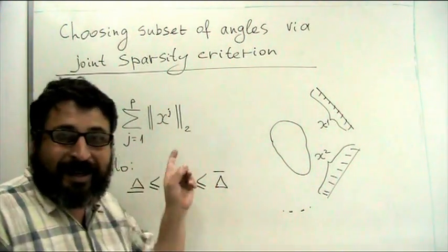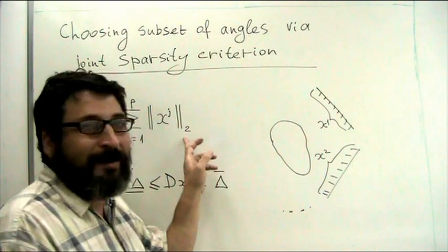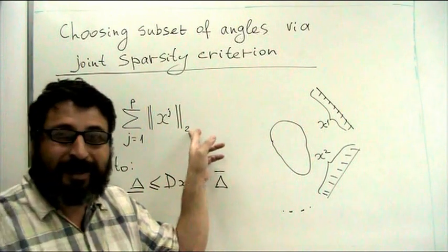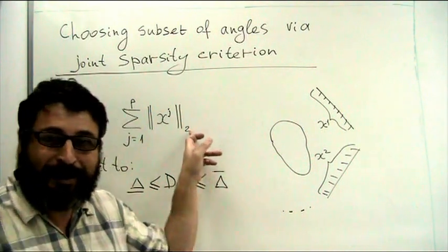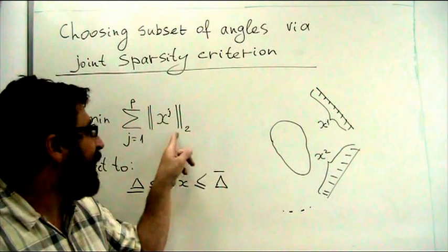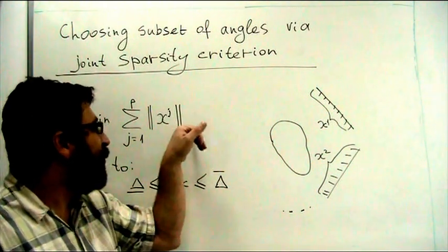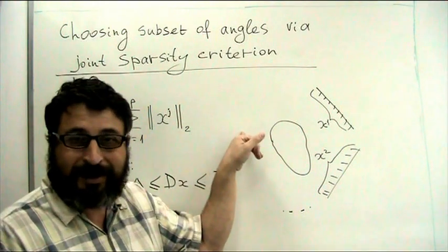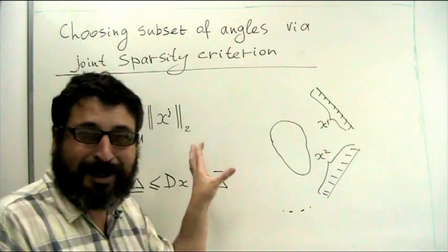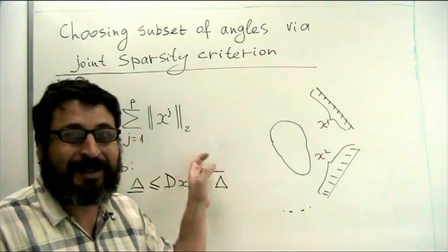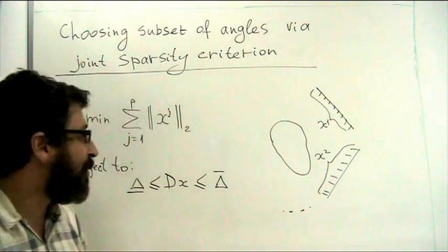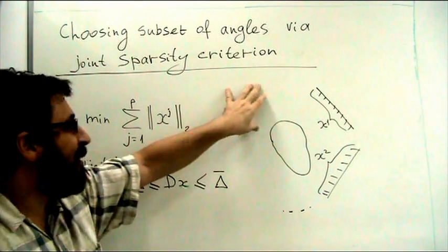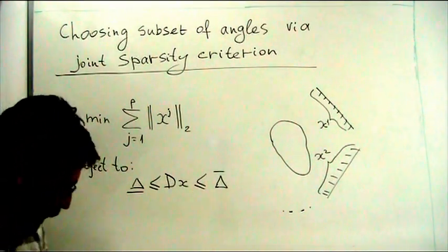And by the way, I should note that despite that people use here 2 norm, actually it may be even preferable to use some p norm or q norm with index larger than 2, up to infinity. And we didn't do any numerical testing on this yet, but it's one of our future directions. And I will show you later by simulation that this approach actually works rather good.